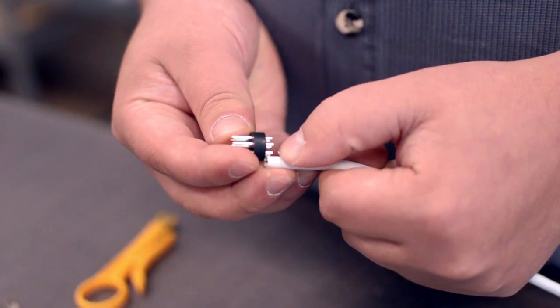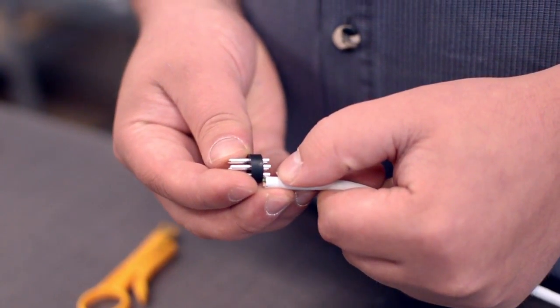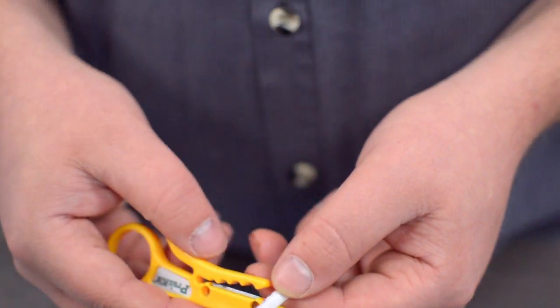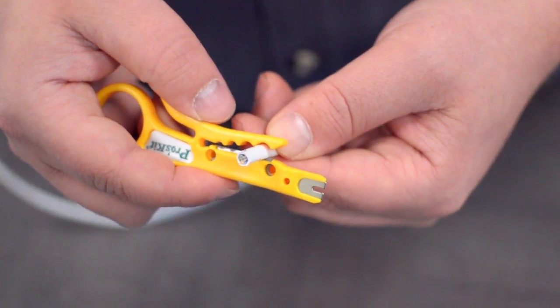Measure how far you will need to strip back the jacket by holding the cable up against the base of the connector. Then, strip the cable jacket using the wire strippers.